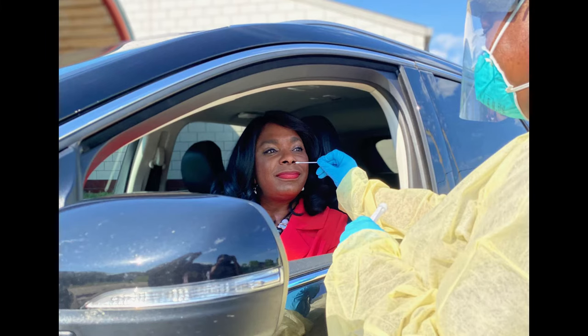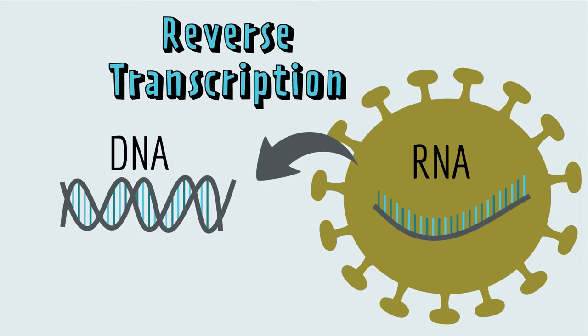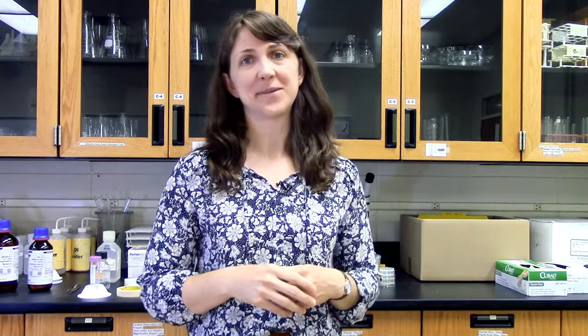So to test if someone has the COVID-19 coronavirus, scientists use reverse transcription PCR because the coronavirus has RNA, not DNA, as its genetic material. But let's say you don't just want to know if the coronavirus is present — you want to know how much is present in a sample. That's where real-time PCR comes in.